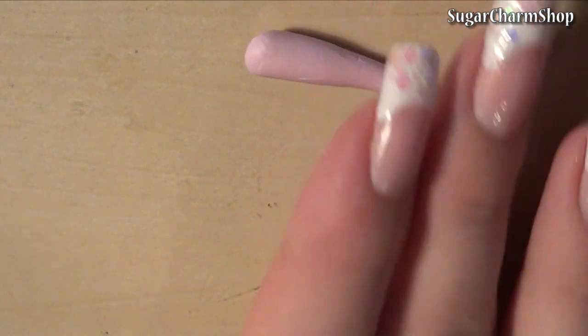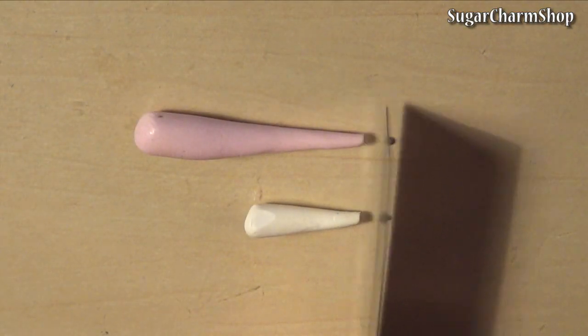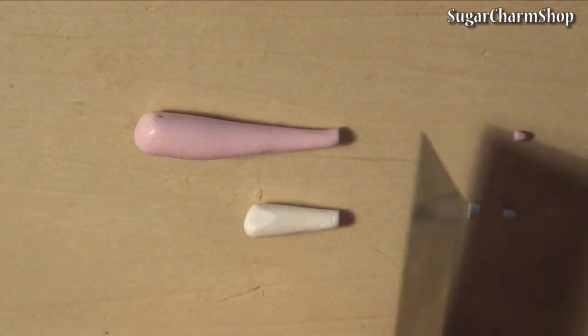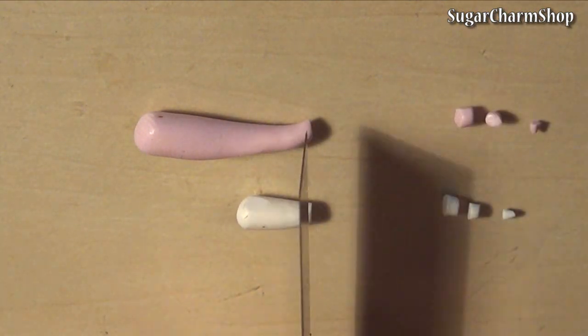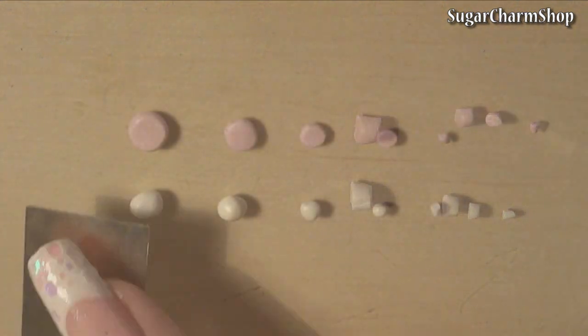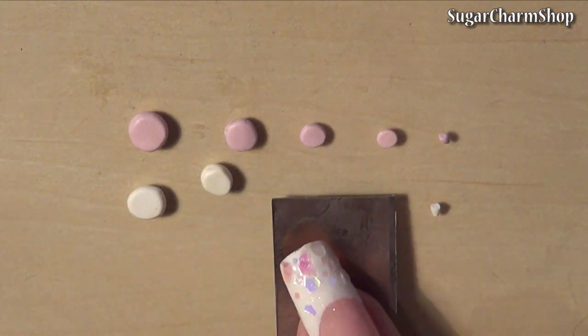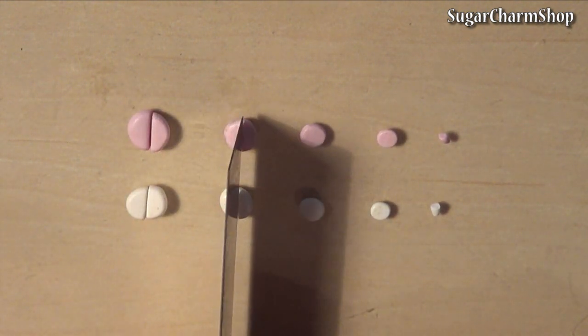For the ice cream, I rolled out two colors and cut off slices like shown in the video to create layers of different sizes. Cut each layer in half and combine the colors.